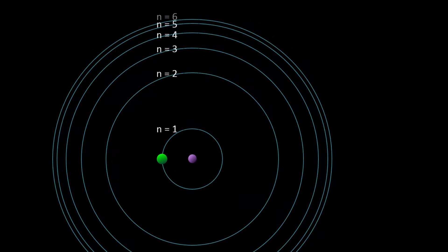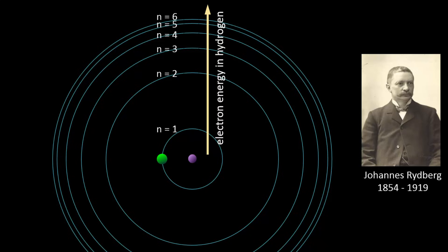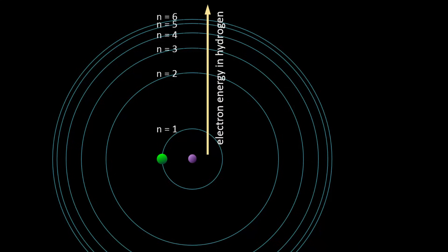Bohr numbered his orbits with integers, symbolizing each orbit with the letter N representing the electron's energy. The letter N and the numbering came out of earlier mathematical analyses of alkaline metals emission spectra by Johann Rydberg in 1888, and so using integers is not arbitrary, and they have mathematical significance, which we will explore further a bit later on.